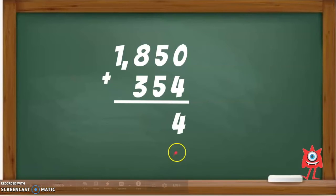Here comes the tricky part. If you add the digits in the tens place, 5 plus 5, you get 10. But 10 is a 2-digit number.